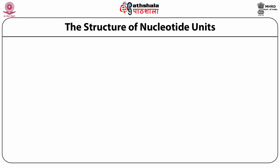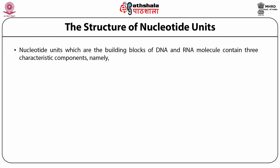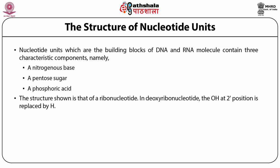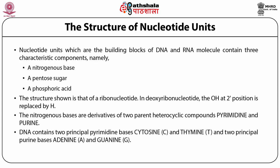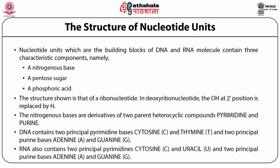Nucleotide units, which are building blocks of DNA and RNA molecules, contain three characteristic components: a nitrogenous base, a pentose sugar, and a phosphoric acid. In a deoxyribonucleotide, the OH at the 2' position is replaced by H. The nitrogenous bases are derivatives of two parent heterocyclic compounds — pyrimidine and purine. DNA contains two principal pyrimidine bases, cytosine (C) and thymine (T), and two principal purine bases, adenine (A) and guanine (G). RNA also contains two principal pyrimidines, C and uracil (U), and two principal purine bases, adenine (A) and guanine (G).